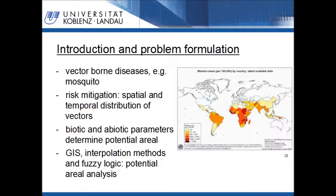Every species has characteristic requirements on the environment in which it can be found. For many mosquitoes, temperature and rainfall are parameters determining if a location fits as a habitat. I will therefore present a method how such an area analysis for a given species can be performed according to the species requirements through the application of an open-source GIS software, mathematical interpolation methods, and fuzzy logic.